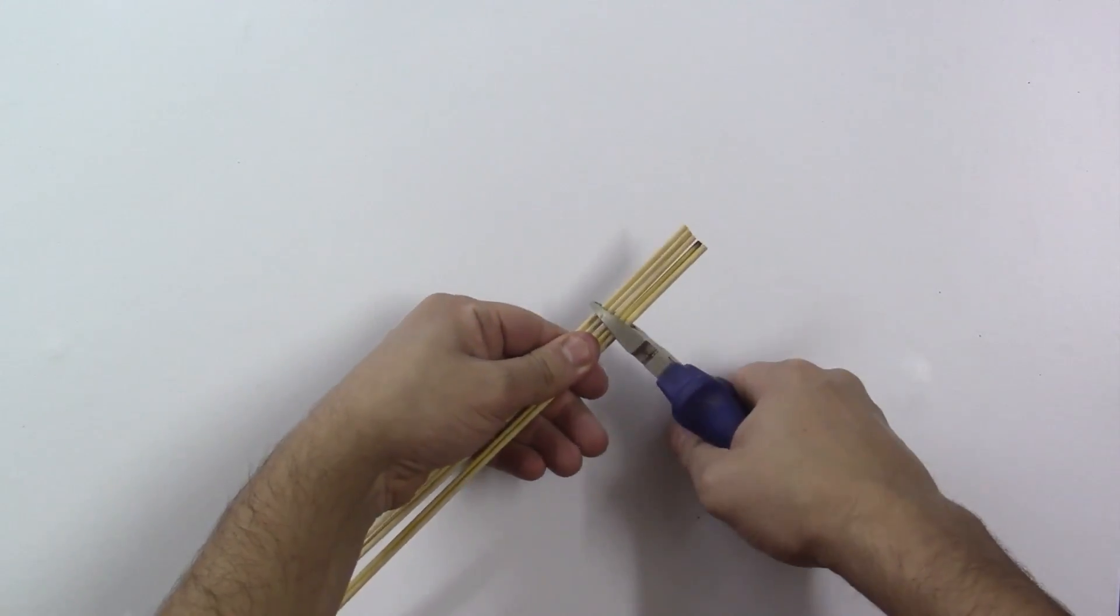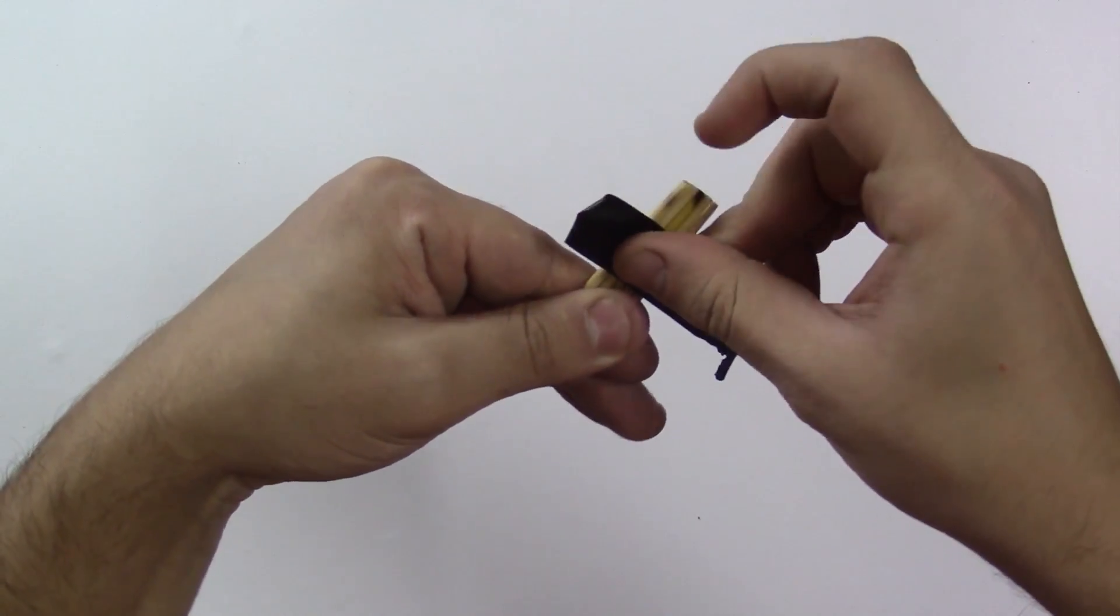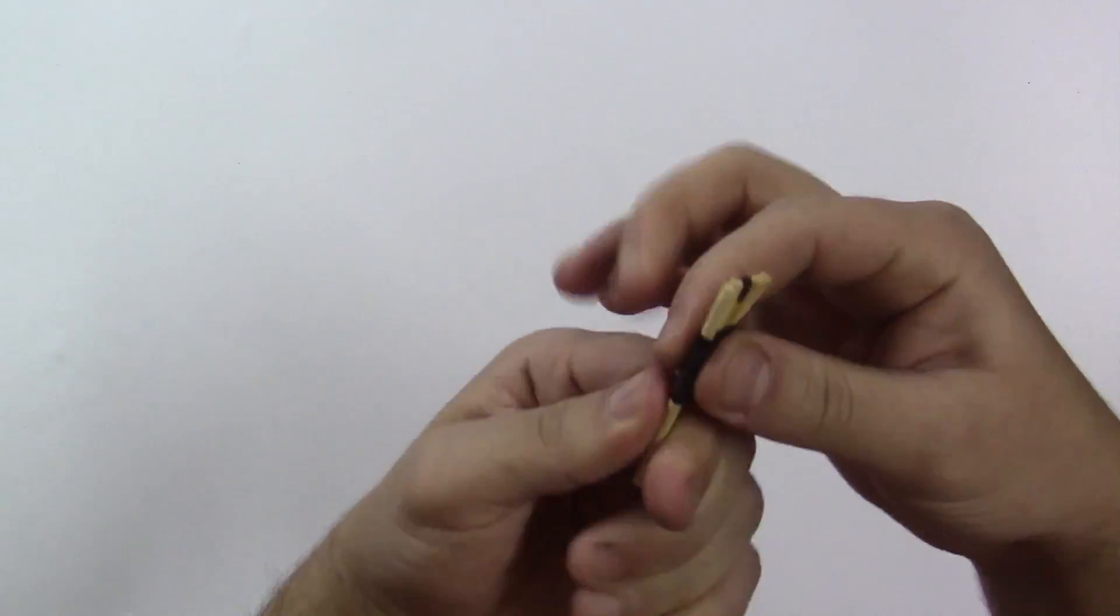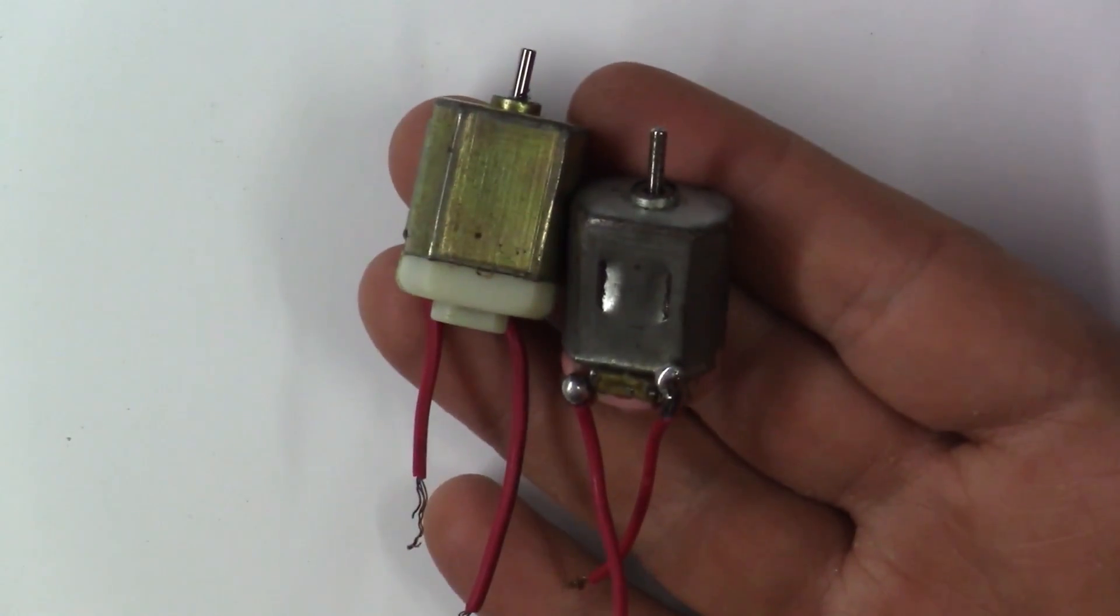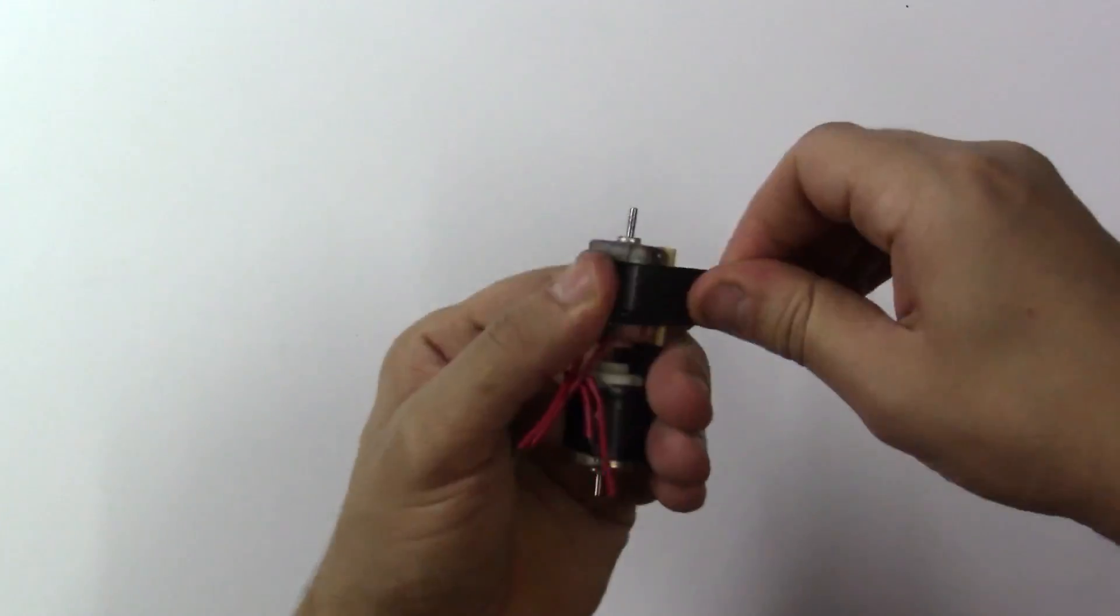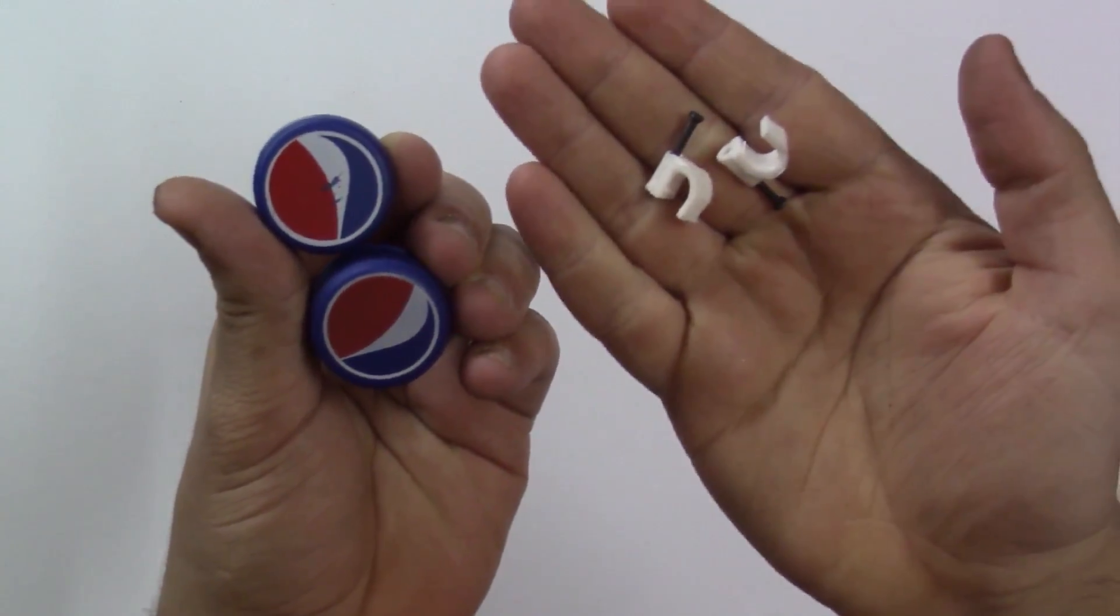First take the barbecue skewers and cut off two inches, then tape them all together using electric tape like this. Take the two motors and tape them with the skewers like this.